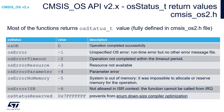Most functions within the CMSIS-OS API version 2 return an osStatus_t type value. It is fully defined within the cmsis_os.h file, and it is very important to understand the meaning of the values of this type. When osStatus_t equals zero, it means the function completed successfully. Minus 1 means there was an unspecified operating system error during execution. Minus 2 means the function could not fully execute within the given timeout period. Minus 3 means there was a problem with resource availability. Minus 4 means there was a parameter error.